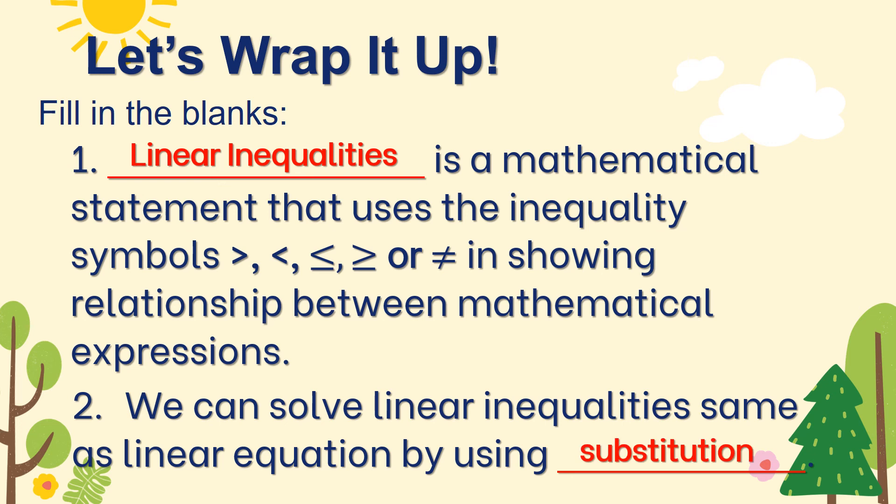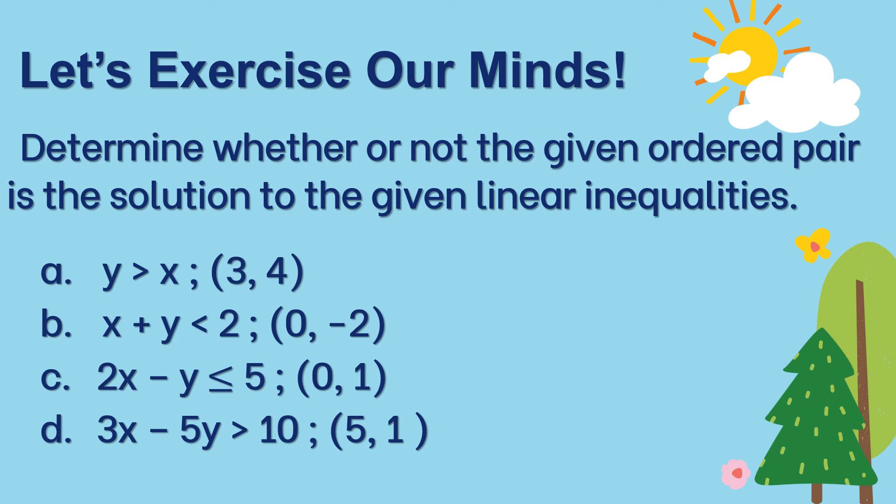Now let's exercise our minds. Determine whether or not the given ordered pair is a solution to the given linear inequalities. Letter A: y is greater than x, ordered pair (3, 4). Letter B: x plus y is less than 2, ordered pair (0, negative 2). Letter C: 2x minus y is less than or equal to 5, ordered pair (0, 1). And letter D: 3x minus 5y is greater than 10, ordered pair (5, 1).